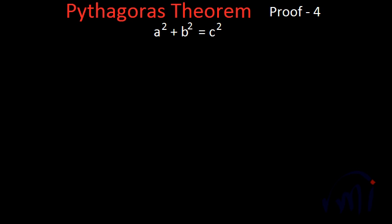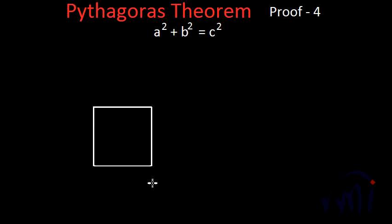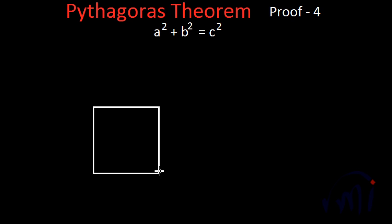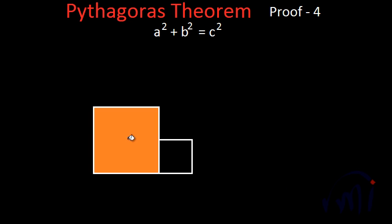So what is a squared? a squared is actually the area of a square whose one side is a. So if I make one more square with one side equal to b, the area of the smaller square will be b squared. So this is a squared and this is b squared.